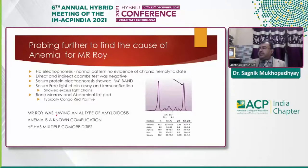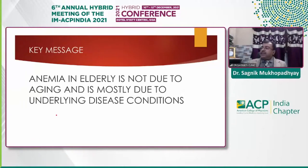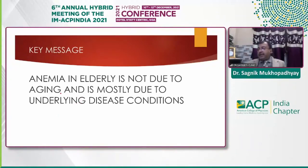Ultimately Mr. Roy was diagnosed with amyloidosis because he had bone marrow positivity — a common comorbidity associated with anemia. We see that the patient is having multimodal problems. The key message is that anemia in the elderly is not due to aging and is mostly due to underlying disease conditions. We have to be very patient and search for the causes in elderly patients — we don't have to stop investigating them just because they have become older. Thank you.